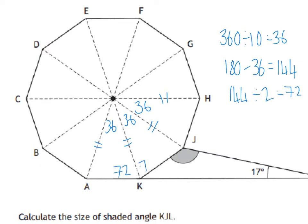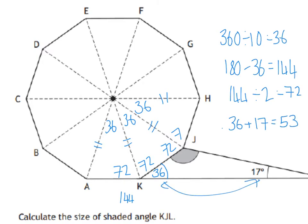So these angles here are 72. That gives us enough information to now get this angle. This is on a straight line, so you've got 72 and 72 is 144. That makes this missing angle in here 36. Then all we have to do is 36 plus 17, which is 53. So these two angles combined make 53. So the missing angle, the shaded one, is 180 take away 53, which is 127.